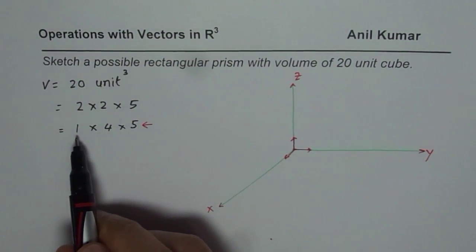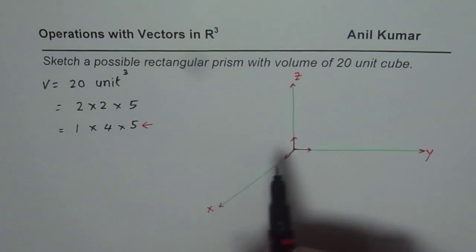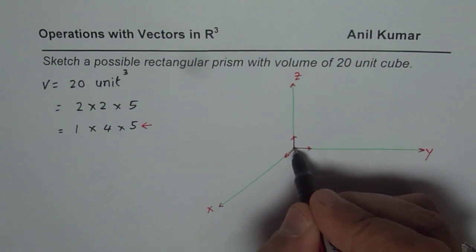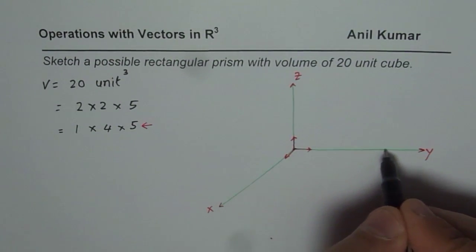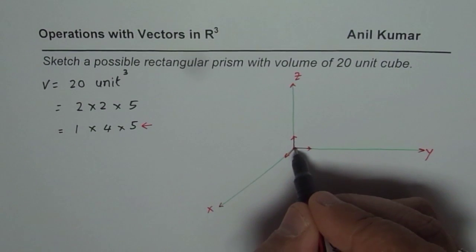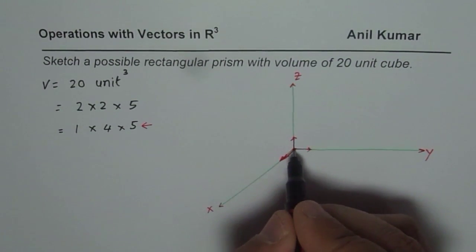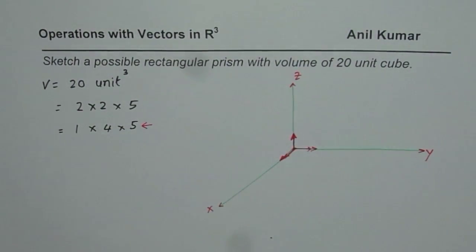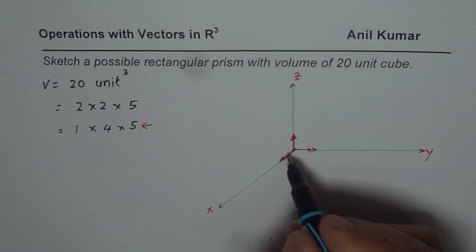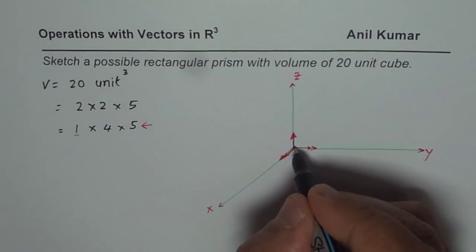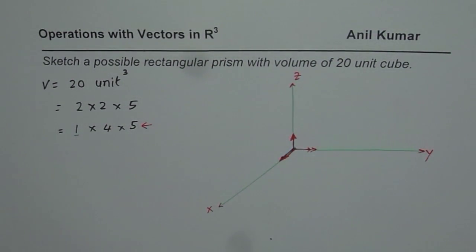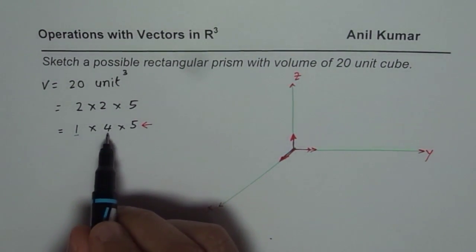I'm taking one unit as the dimension along the x-axis. That is how my unit vector looks. When I say the i-component along the x-axis is 1, I go one unit in that direction. So this is my one unit, representing my side along the x-axis.